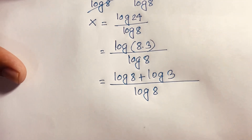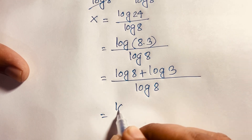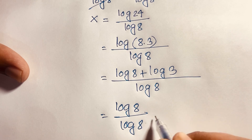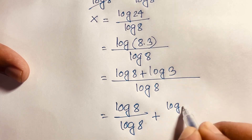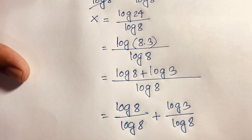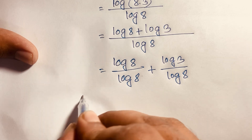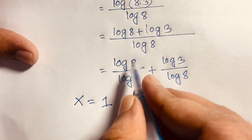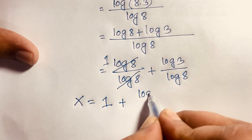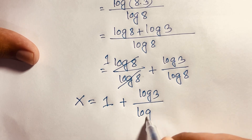Splitting the fraction, this becomes log(8) over log(8) plus log(3) over log(8). Since log(8) over log(8) equals 1, we get x is equal to 1 plus log(3) over log(8).